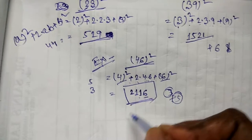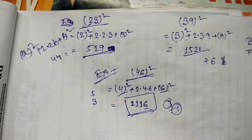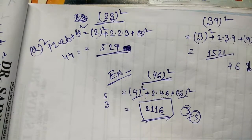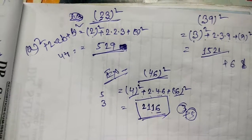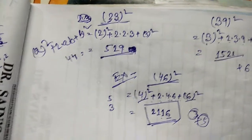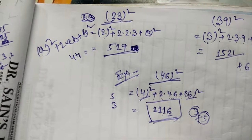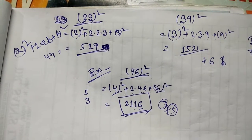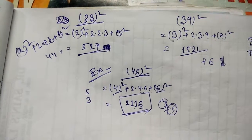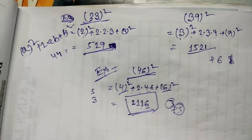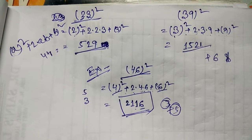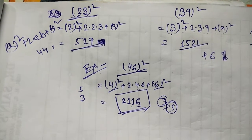So 46² = 2116. You can check it — it's 2116. By this process you can find the square of any two-digit number where 5 is not available in the digits. In the first part I showed how to find the square when 5 is available, and in this video I'm telling you how to do it when 5 is not available. Thank you. If you like my shortcut method and video, please like and subscribe my channel for more videos.